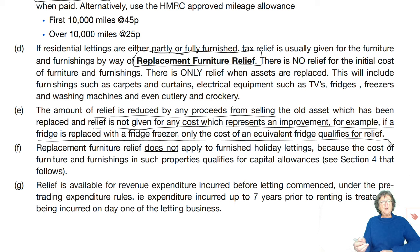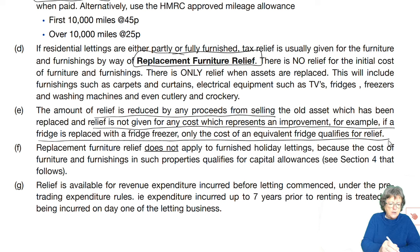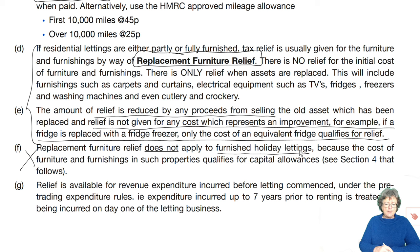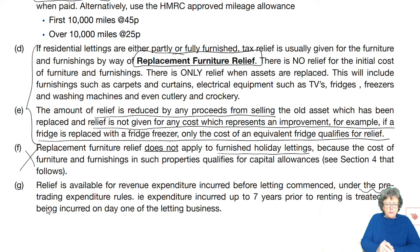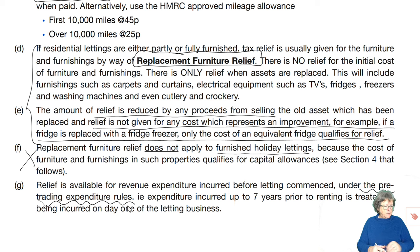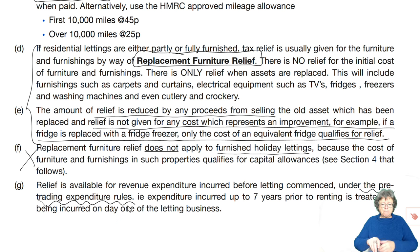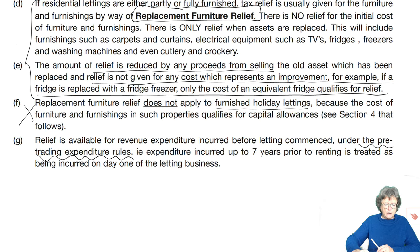It'll be obvious in the question — it'll tell you quite clearly. You can't have replacement furniture relief for furnished holiday lettings, which you'll learn more about later in the chapter. You can also have what's known as pre-trading expenditure, because obviously you will have incurred some expenses prior to letting the property out, and therefore you can claim those.